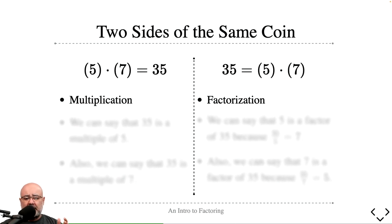Now, what happens if we flip the paradigm? If we multiply 5 and 7, we get 35. That process going in that direction is called multiplication. So if we're given 5 and 7 and we multiply these two things together, we result in 35. That process is called multiplication.